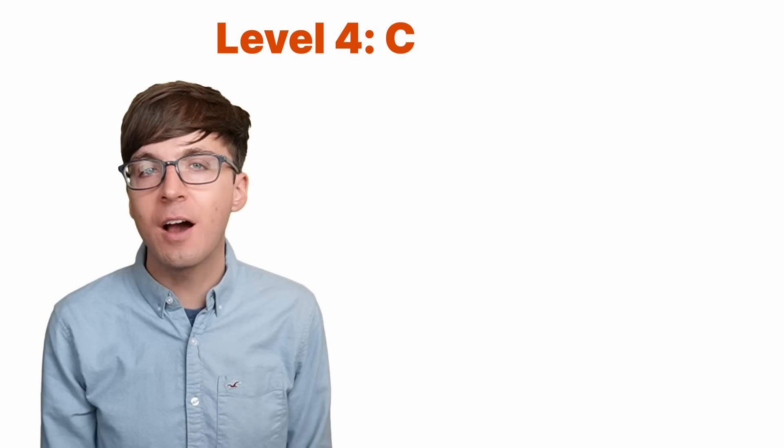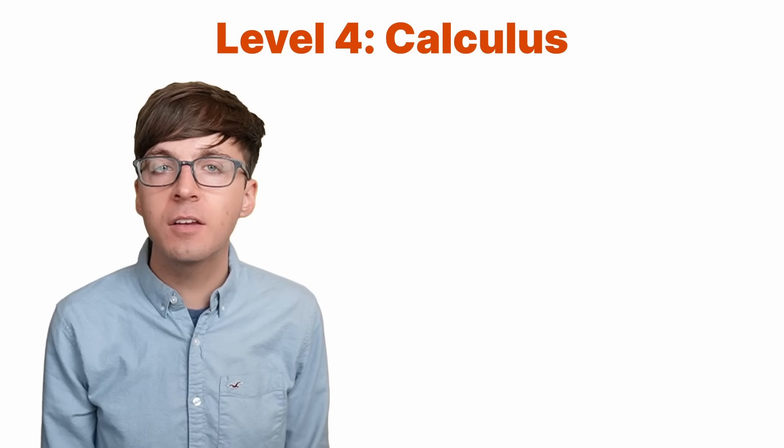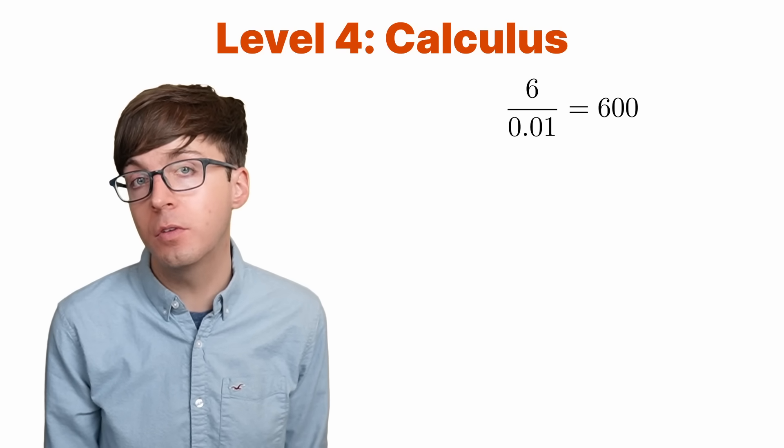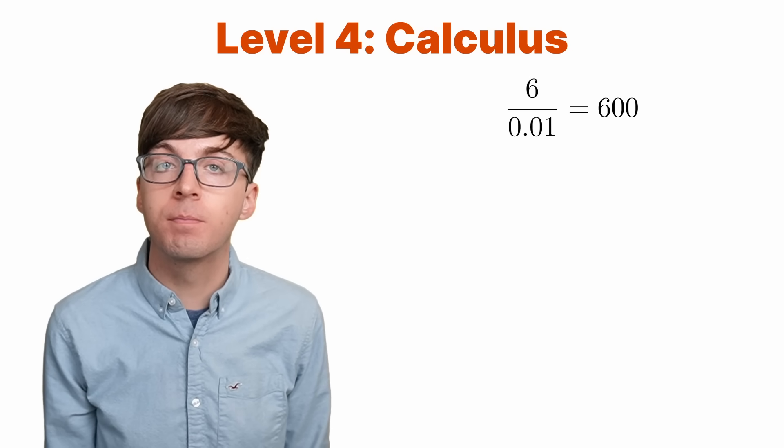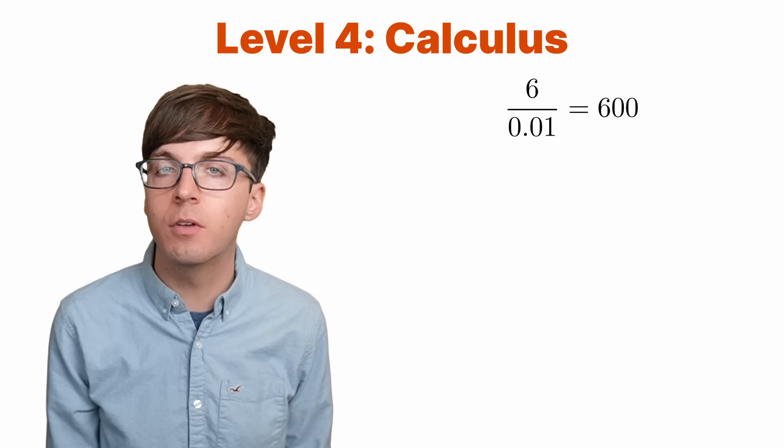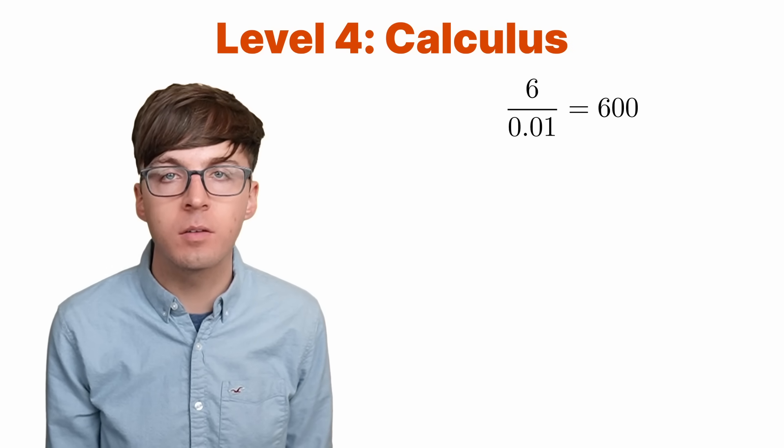For level four, let's look at calculus, where things get even more interesting. Although we can't divide six by zero, we can divide six by a small number close to zero, like 0.01. This gives us 600. This isn't exactly our original question, but it seems reasonable it should be close.